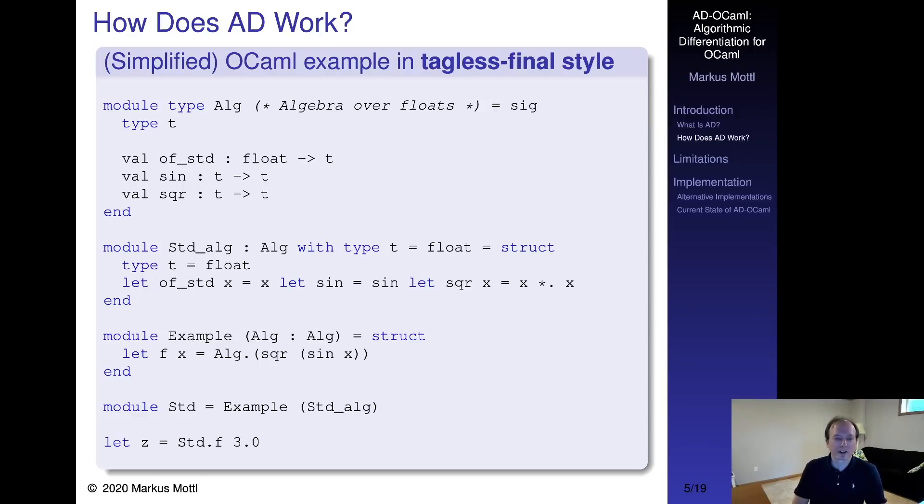So finally, how can we make algorithmic differentiation work with a sophisticated language like OCaml? The approach used by AD-OCaml is the so-called tagless final style. What do we mean by that? Most OCaml applications represent programs using algebraic data types. It's a so-called initial representation. These terms can then be evaluated or transformed using pattern matching in various interpreter functions. Some implementations tag terms with type information that needs to be checked at runtime while others use generalized algebraic data types to leverage the type system of the host language.